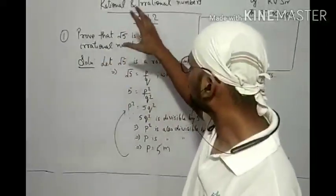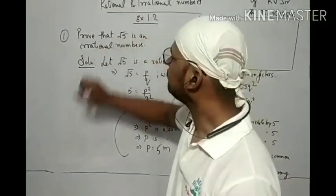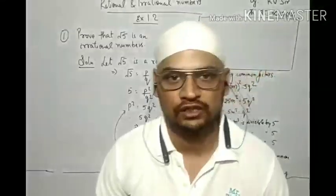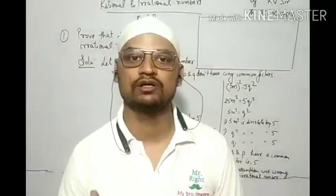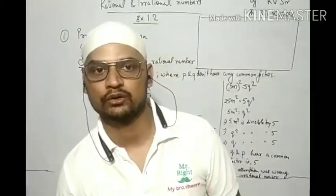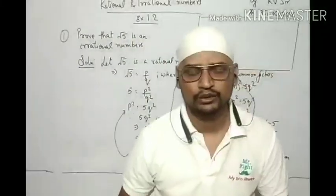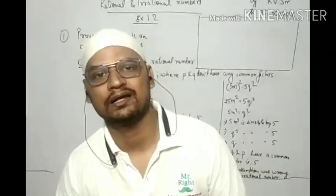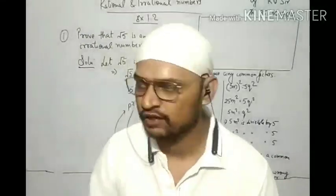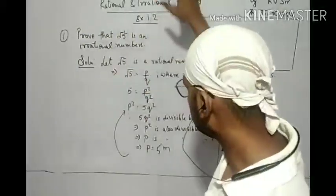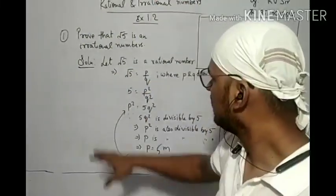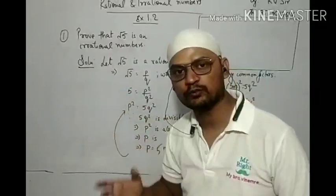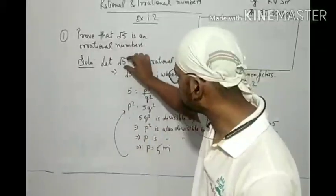Now we are going to prove that √5 is an irrational number, √3 is an irrational number, √2 is an irrational number, and √10 is an irrational number.